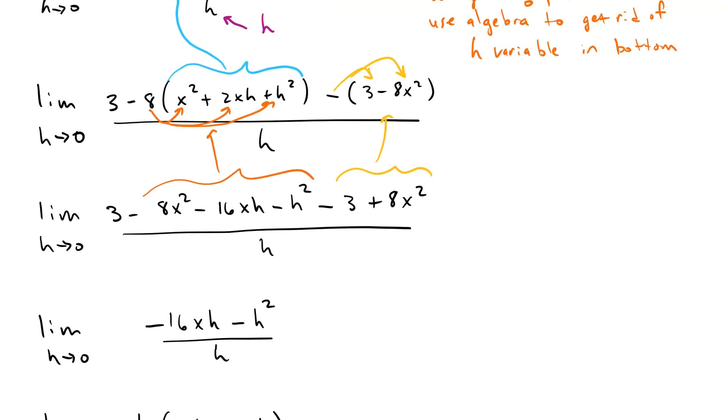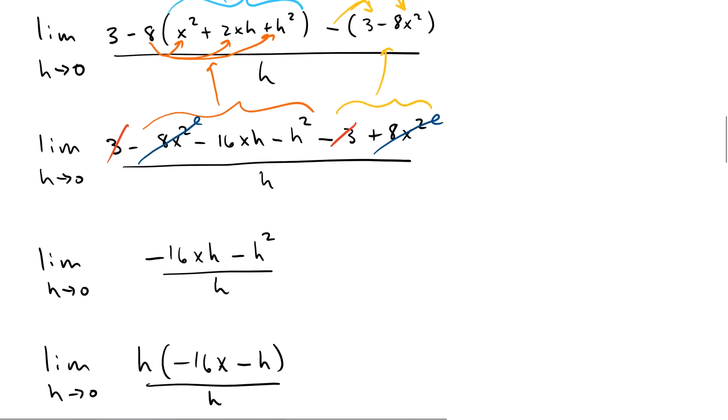Now we can start canceling things. We have a negative 3 there, a positive 3 there. We have an 8x squared there, a negative 8x squared there, and everything else that's left is carried down.